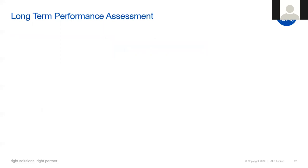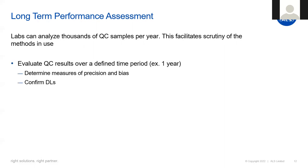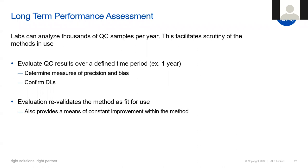Another use for QC samples is evaluation of long-term performance of our methods. Since labs can analyze thousands of QC samples per year, we can look at long-term data and evaluate the methods in use. Generally, this takes the form of collecting QC results over a defined period — for example, one year or two years — statistically analyzing them, and determining measures of precision and bias. We also confirm and recalculate detection limits to ensure they're still appropriate. This evaluation is compared to different objectives to confirm methods are still fit for use, and doing this periodically provides a means for constant improvement and oversight of method performance.